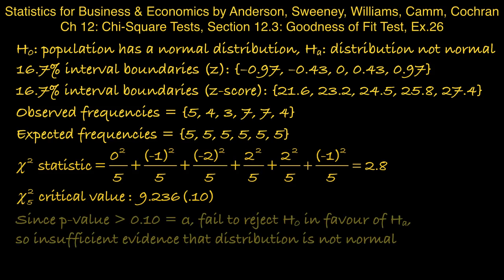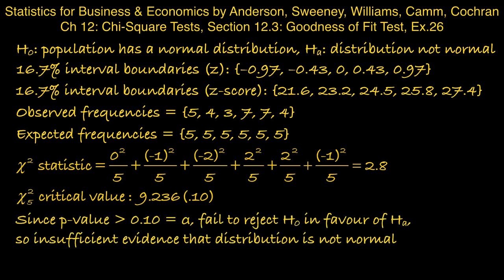In other words, our p-value is larger than 0.1, and so therefore we fail to reject the null in favor of the alternative. This means there is insufficient evidence that the distribution is not normal.